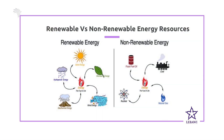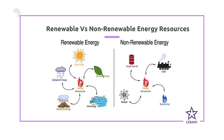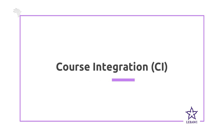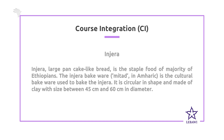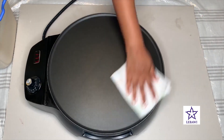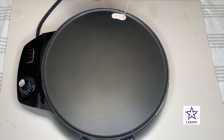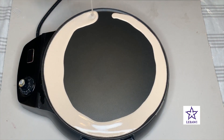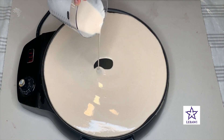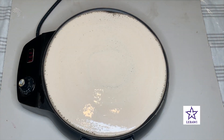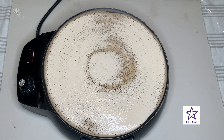So far we have seen different types of energies, defined energy, and the law of conservation of energy. Now let's try to integrate this concept with real life. We know what injera means — injera is a large pancake, like bread, and about 70% of Ethiopians eat injera. This injera is baked on a bakeware called metad in Amharic, which is made of clay, circular in shape, with a diameter of about 45 to 60 centimeters.